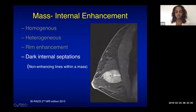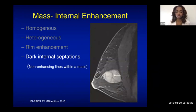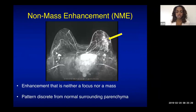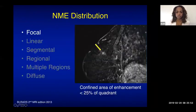Another type of internal enhancement is dark internal septations. The third type of abnormal enhancement is non-mass enhancement, or NME — enhancement that is neither a focus nor a mass, but the pattern is discrete from the normal surrounding parenchyma.